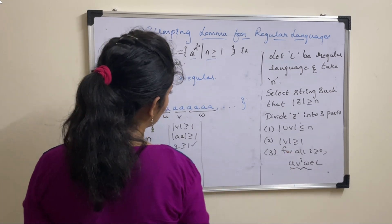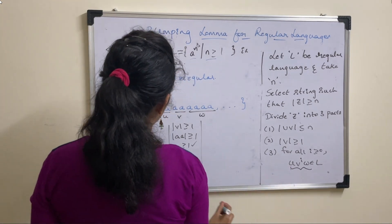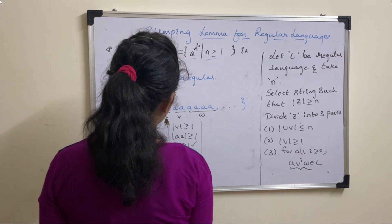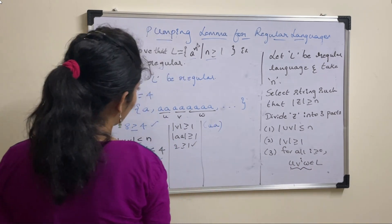Now go for the third one. For all i greater than or equal to 0, you need to prove this string belongs to language. So let us say u value has a a.